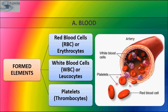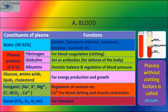Now let's look at the constituents of plasma. Plasma contains water, which is around 90% to 92%, and it acts as a solvent that transports vitamins, hormones, enzymes, and nutrients to various parts of the body. Plasma proteins are of three types: fibrinogen, globulins, and albumins. Fibrinogen's main function is blood coagulation. Globulins act as antibodies for defense of the body. Albumin maintains osmosis and regulates blood pressure.